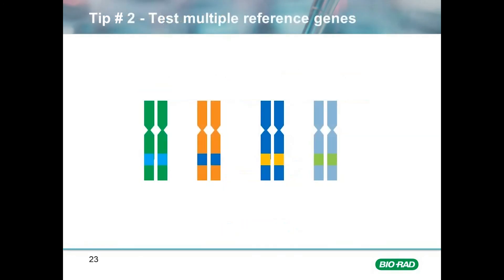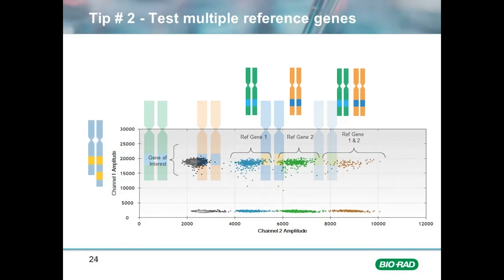The second tip is to test multiple reference genes and select the one, two, or more that give you the most stable results. In some disease states, different portions of chromosomes can be deleted or amplified, and although standard reference genes often work fine, it's always a good idea to test and validate your reference gene for stability. We generally recommend testing four reference genes as a starting point. If a single gene is not found to be sufficiently stable, two or more genes can be run in multiplex to normalize our reference gene.